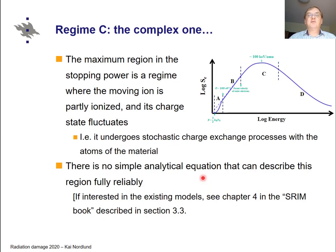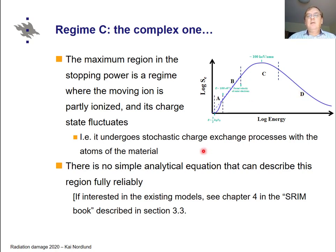These were the two simpler regimes. Then there is regime C, around the maximum of the stopping power. There has to be a maximum because in regime B the stopping power is proportional to velocity and increases with energy, while in the Bethe-Bloch regime the stopping power decreases with energy, so obviously there must be a maximum in between.